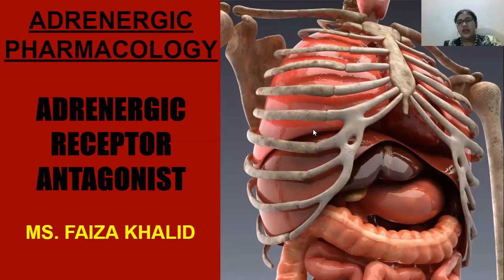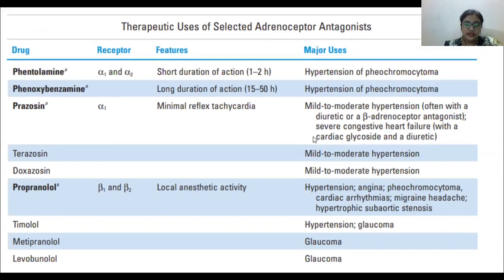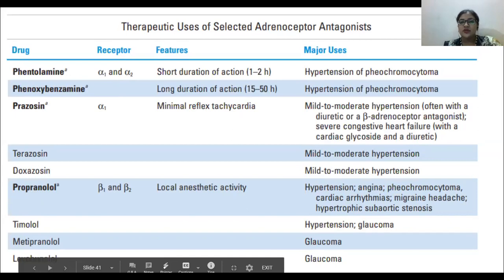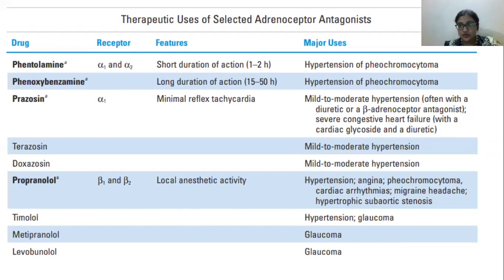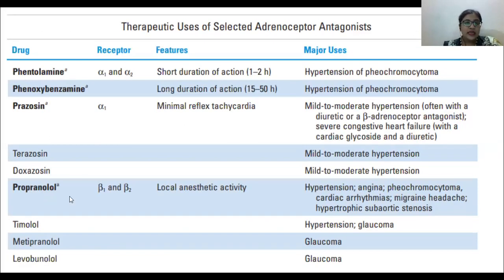Here I am presenting a summary. Since we have already given a quiz on this topic, I expect you all to know what alpha and beta receptors do. We are going to talk about the drugs, the receptors on which they act, their special features, and their major uses. Drugs mentioned in bold letters are the prototypes — the main compounds.